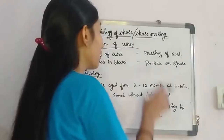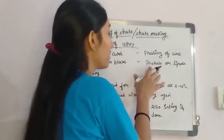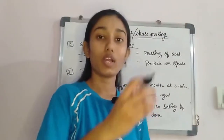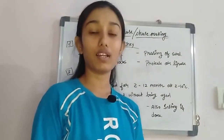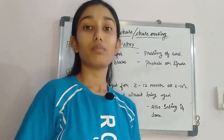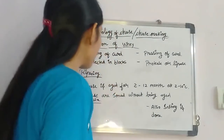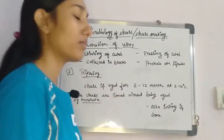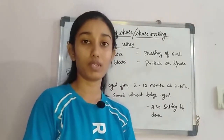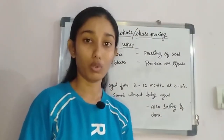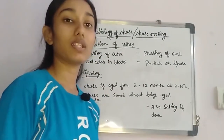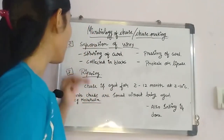We can use protease or lipase enzyme. What this does is that the extra whey left in the curds — the whole whey — will be removed. So this is the whey separation part. Once we have all the curds in concentrated form available, we proceed to the last procedure, which is ripening.